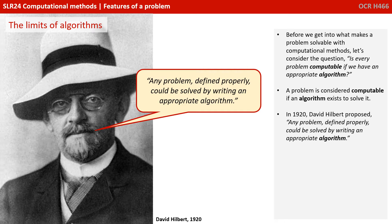Before we get into what makes a problem solvable with computational methods, let's consider the question: is every problem computable if we have an appropriate algorithm? A problem is considered computable if an algorithm exists to solve it. In 1920, David Hilbert proposed that any problem defined properly could be solved by writing an appropriate algorithm.